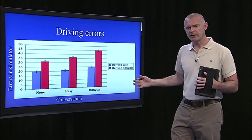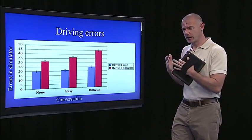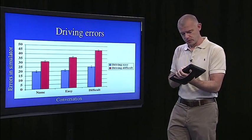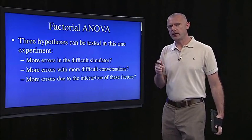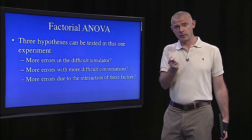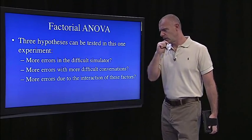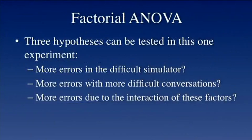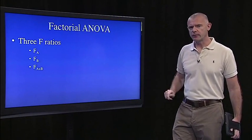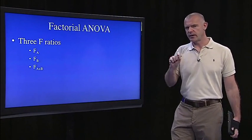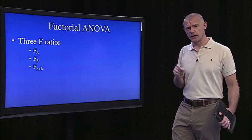But how do we get there mathematically? How do we get p-values and F-ratios? We can actually test three hypotheses with this factorial ANOVA. We could ask: did subjects make more errors in the difficult simulator? Did they make more errors with the more difficult conversation? And is there an interaction? So we're going to calculate three F-ratios: F sub A, F sub B, and F sub A-by-B, which is the interaction term.